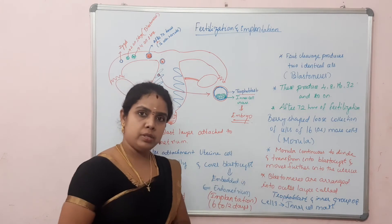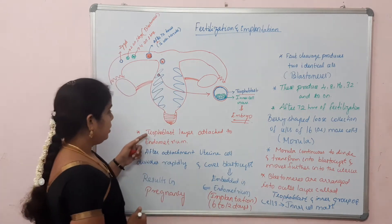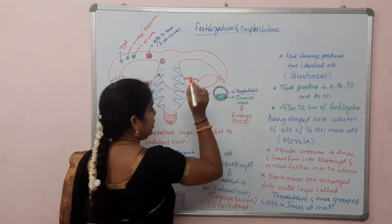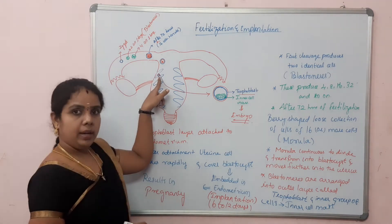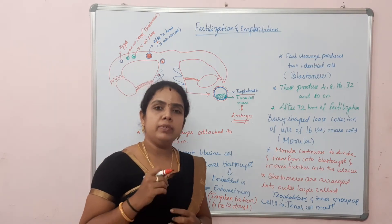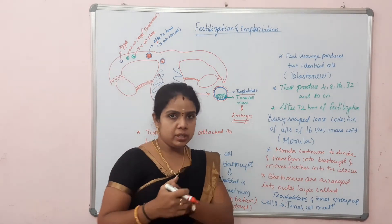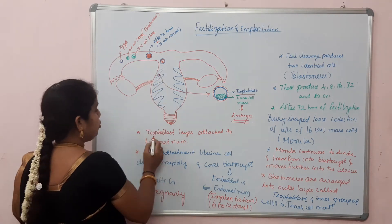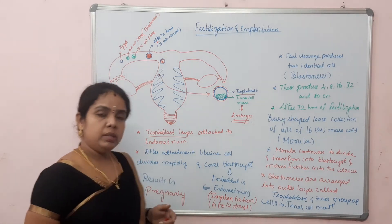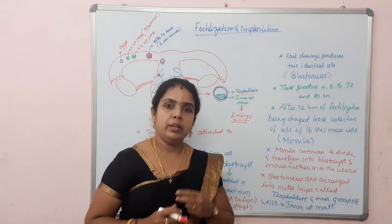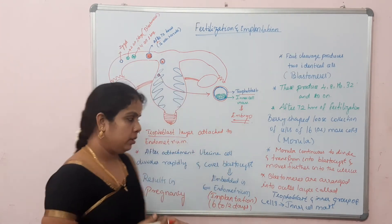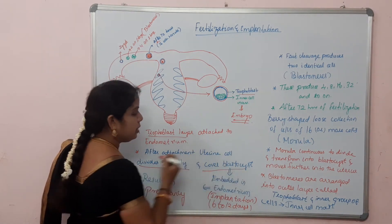After this process, once the blastocyst is formed, the trophoblast layer attaches to the endometrium — this outer blue layer is going to attach with the endometrial layer. As we studied already, the endometrium is the layer in which implantation takes place. Once the blastocyst is attached to the endometrium, the uterine wall cells start growing and dividing rapidly, covering the blastocyst.